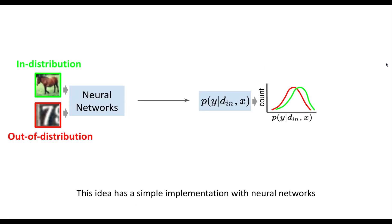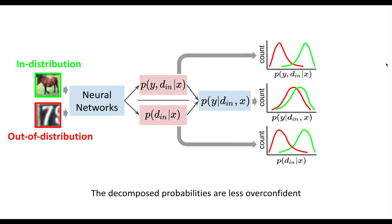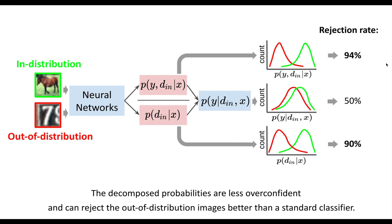This idea has a simple implementation with neural networks by having a branch for each term. The decomposed probabilities are less overconfident and can reject the out-of-distribution images better than a standard classifier.